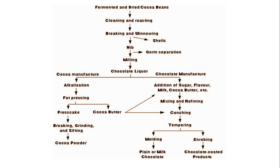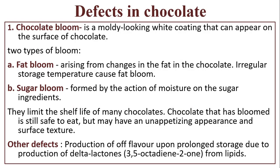This chart shows the whole process of making chocolate. First, ferment and dry cocoa beans, then cleaning and roasting, breaking and winnowing, and milling to chocolate liquor. It then bifurcates: the cocoa manufacturer path involves alkalization, fat pressing, press cake breaking, grinding, sifting, and producing cocoa powder. The chocolate manufacturer path involves addition of sugar, mixing, refining, conching, tempering, and finally producing plain or milk chocolate by molding and by enrobing for chocolate-coated products.